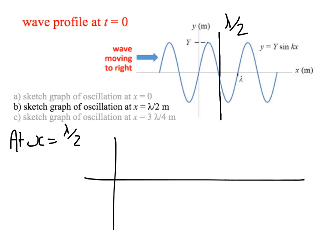Again, it's a graph of oscillation, so it's displacement as a function of time. And again, simply by looking at the profile, we can get one point on our curve. Because at x equals lambda over 2, and at time t equals 0, we know that the displacement, once again, is 0. So our curve goes through here.